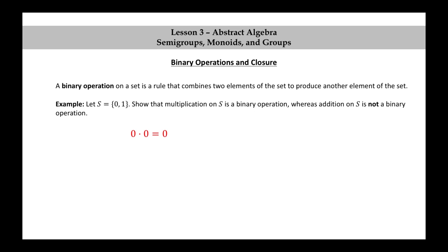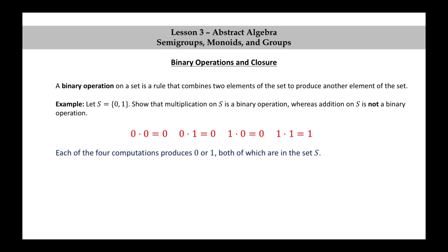0 times 0 is 0, 0 times 1 is 0, 1 times 0 is 0, and 1 times 1 is 1. So all four possible products from this set give us an element that's in this set. Each of the four computations produces 0 or 1, both of which are in the set S. This proves that multiplication on S is a binary operation.